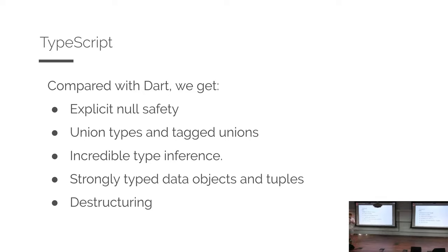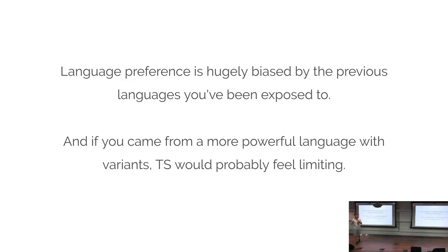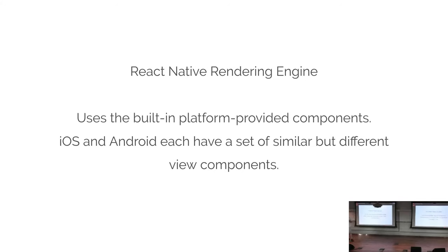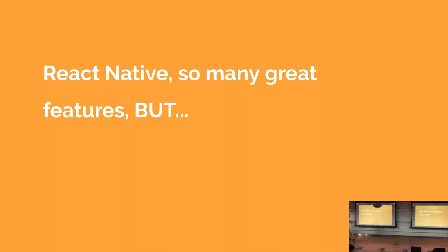Destructuring and things like that — we use these every day, and if you go to a language that doesn't have them you notice it. Language preference is usually biased by previous languages you've been exposed to. An interesting distinction: React Native's rendering engine uses the built-in platform-provided things. Open a calendar on Android, it uses the OS date picker; on iOS it uses that scrolling wheel thing. For better or worse it uses what the platform provides — you get the action sheet at the bottom on iOS — but these things can be slightly different across platforms, and how a view handles overflow can be frustrating.